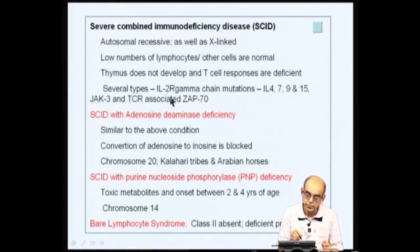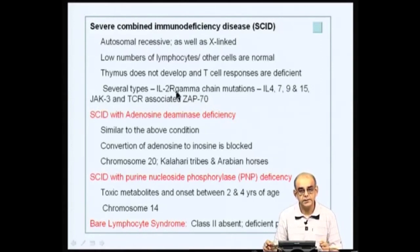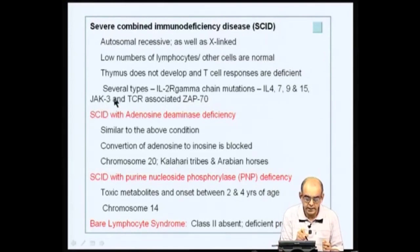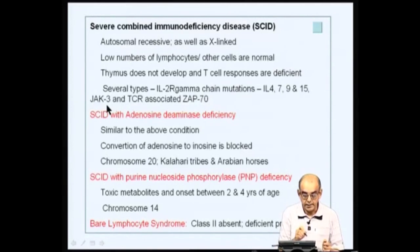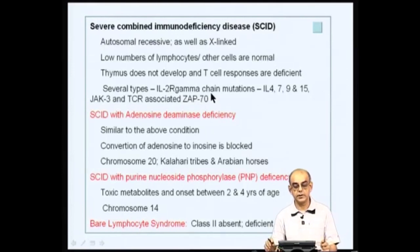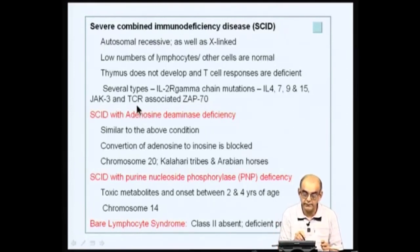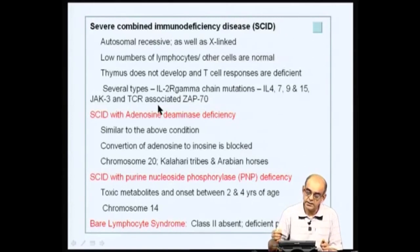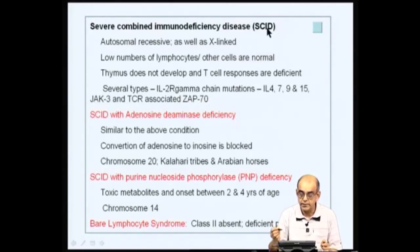In addition to mutations in the IL-2 receptor gamma chain, there is SCID where JAK3 (Janus kinase 3) is affected. In addition to that, the TCR-associated protein ZAP70 is also deficient in function, leading to a deficiency in T cell function. As you can see, there are several types of SCID diseases.